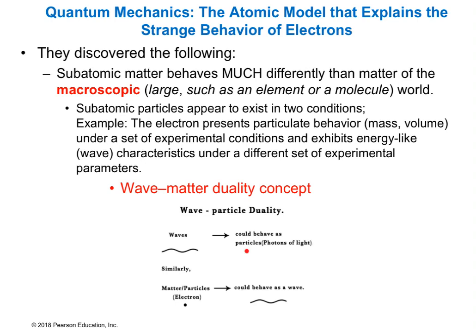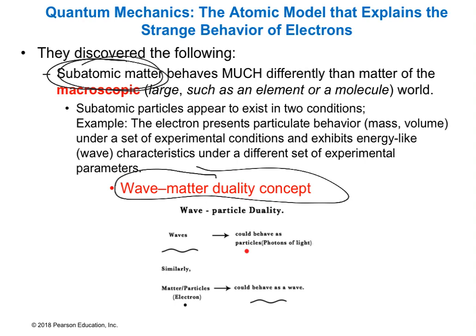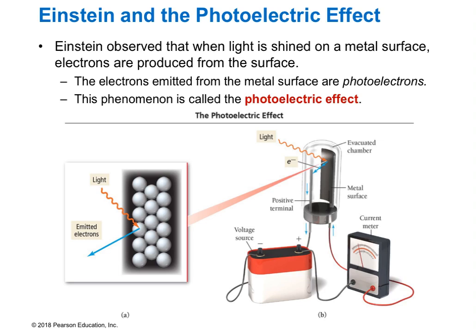The key to the quantum mechanical model is the discovery that subatomic matter — like electrons, protons, neutrons — behaves completely differently than objects large enough for us to see. You may have heard of wave-matter duality. It turns out that light, which is energy not matter, and also matter like the electron, sometimes behaves as a wave and sometimes as a particle. Once it was proposed that the electron has this wave-particle duality, things took off as far as modifying our model of the atom.